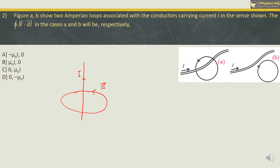Ampere's circuital law states that when you take any closed loop and do the line integral on it — denoted with a small circle on the integral — this equals mu0 times I, where I is the current enclosed inside the loop and mu0 is the permeability. In the first case, if we curl the fingers of the right hand in the anti-clockwise direction, the thumb points in one direction, but the current is flowing in the opposite direction. So the integral gives the result as minus mu0 I.